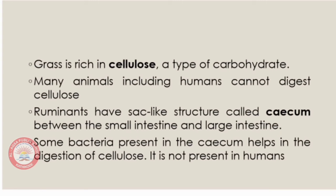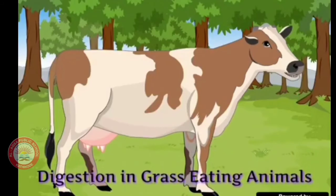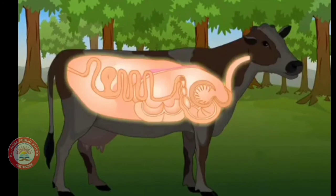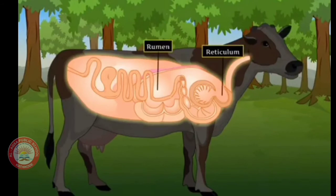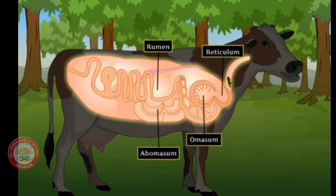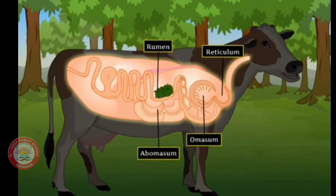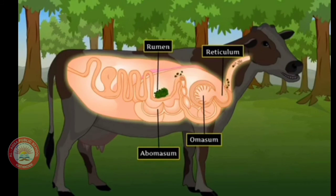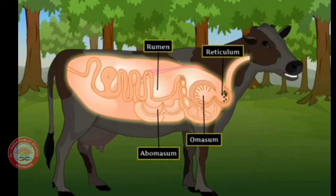Let us now watch a video on digestion in grass-eating animals. Unlike humans, all grass-eating animals have a special stomach with four chambers: rumen, reticulum, omasum, and abomasum. The animals quickly swallow the grass and store it in the rumen, where the food gets partially digested. This partially digested food, called cud, is pushed into the reticulum and then sent back to the mouth for thorough chewing — a process called rumination.